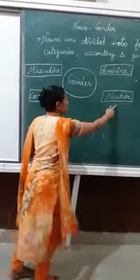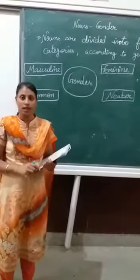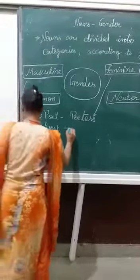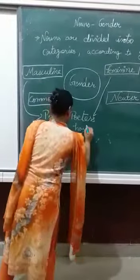Next is neuter gender. For example, host and hostess. Next is man, human. Also hawk and hen.